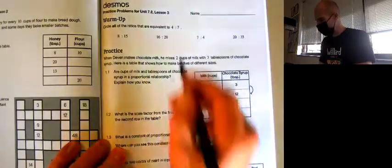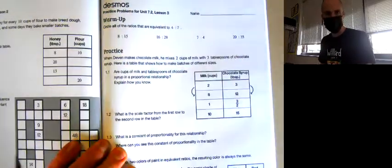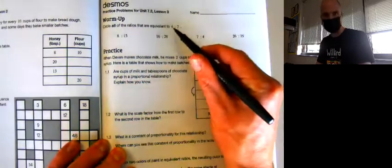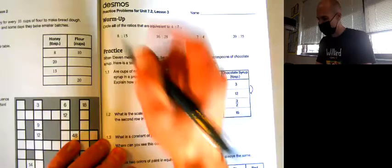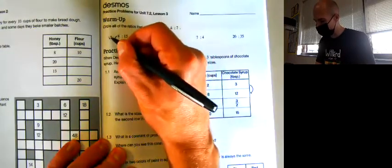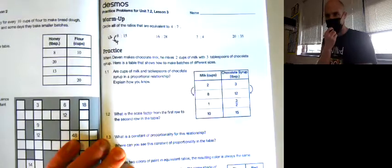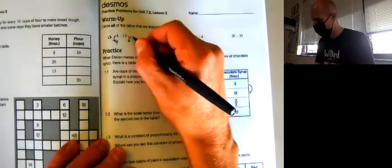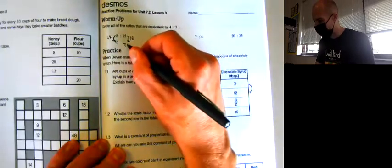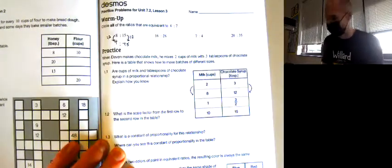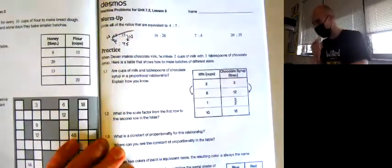I know that these ratios are equivalent if I can multiply or divide both sides of the ratio by any number to arrive at 4 colon 7. Checking this first one with the 8, if I divide by 2 I could get 4. But if I divide the other side by 2, 15 divided by 2 is 7.5. So this doesn't give me a 4 colon 7 ratio, this gives me 4 colon 7.5.